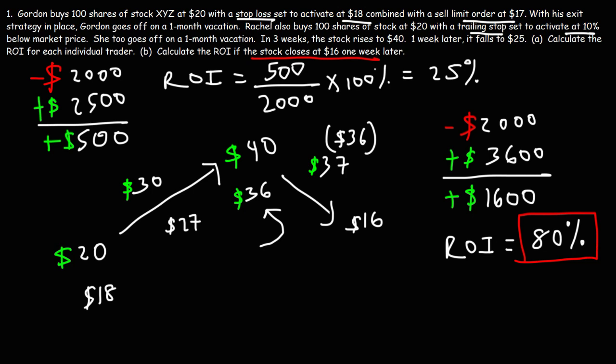If he gets out at $18, he's looking at a 10% loss. He put in $2,000 and now he's selling his shares at $18 times 100. So he's looking at a $200 loss. Note that Gordon was right in buying the stock because it did go up.